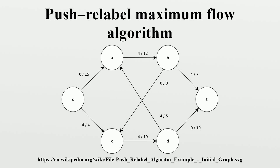The generic push-relabel algorithm is a proof-of-concept version that does not specify how to select an active vertex for push and relabel operations. This generic version terminates in O. Since H(S) equals |V| and H(T) equals 0, and there are no paths longer than |V| minus 1 in GF, S must be disconnected from T. At initialization, the algorithm fulfills this requirement by creating a preflow F that saturates all out-edges of S. After initialization, the algorithm repeatedly executes an applicable push or relabel operation until no such operations apply, at which point the preflow has been converted into a maximum flow.